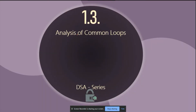Hello and welcome back. In this video we will talk about analysis of common loops. In previous videos we have seen what exactly algorithms are and how we analyze them. We have seen asymptotic notation and how to analyze basic algorithms. We are going to take a few examples of common loops — for loops, while loops, and for-if nested structures — and see how we analyze them.